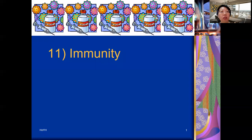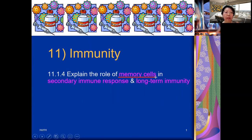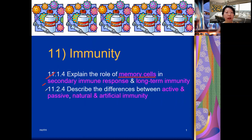For today, we will continue with the immune response. We're going to look at the memory cells that are produced during immune response, be it the humoral immune response where B cells are activated, or cell-mediated response where T killer cells are activated. We're going to explain the role of memory cells in the secondary immune response as well as long-term immunity, and then describe the differences between active and passive, natural and artificial immunity.